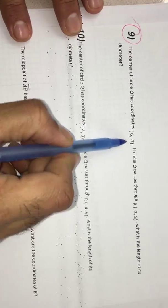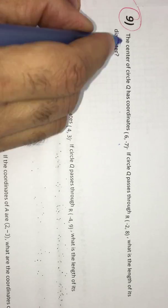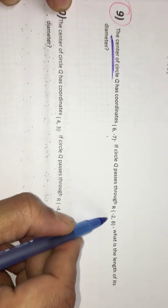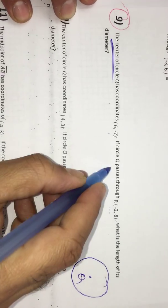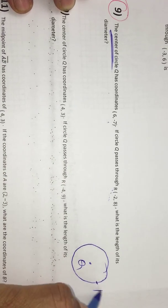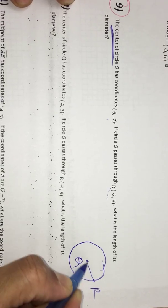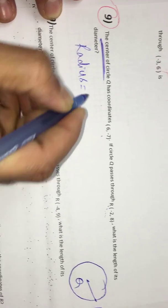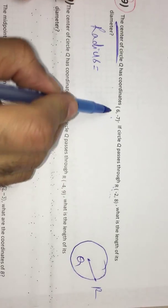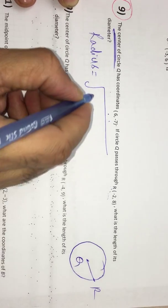What is it saying? Q has coordinates. Q is the center of the circle and this is passing through this point. That means if you take a circle, this Q is here and this R is somewhere here. If you join Q, you will get radius. What is radius? Radius is equal to the distance between Q and R. So I am finding first distance.